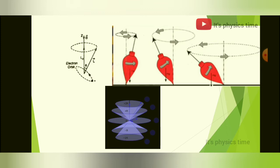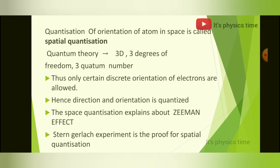The third picture represents different values of L and how spatial quantization occurs. Spatial quantization is the quantization of the orientation of the atom in space. Simply, it gives space for both the electron and orbit. In the vector atom model we have three dimensions — if you want to define the position of the electron, you need three degrees of freedom and hence three quantum numbers. The first two quantum numbers define the size and form, and the third defines the orientation. Only certain discrete orientations of electrons are allowed; hence direction and orientation are quantized. Spatial quantization explains the Zeeman effect, and the Stern-Gerlach experiment is great proof for spatial quantization.